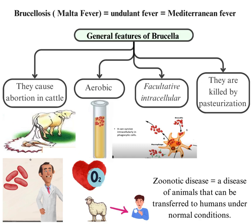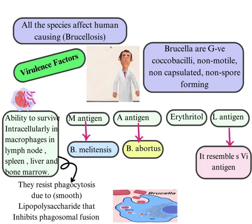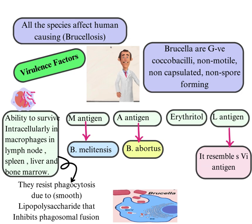Brucellosis is a zoonotic disease, meaning a disease of animals that can be transferred to humans under normal conditions. General features of brucella: brucellas are gram-negative coccobacilli, non-motile, non-capsulated, non-spore-forming, and have a facultative intracellular ability to survive intracellularly in macrophages, lymph nodes, spleen, liver, and bone marrow. They have the ability to resist phagocytosis due to smooth lipopolysaccharide that inhibits phagosomal fusion. Brucellas have M antigen, A antigen, L antigen, and erythritol.